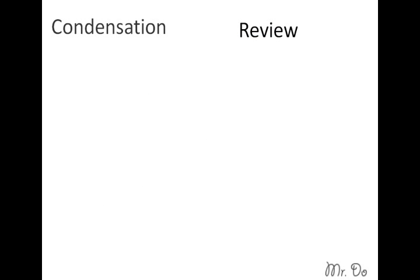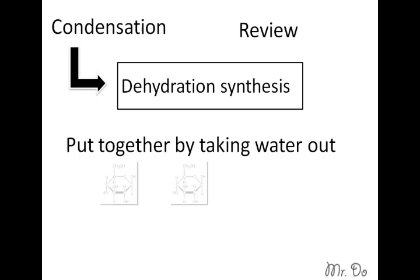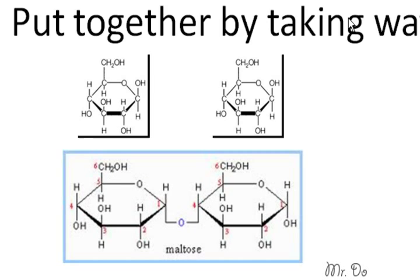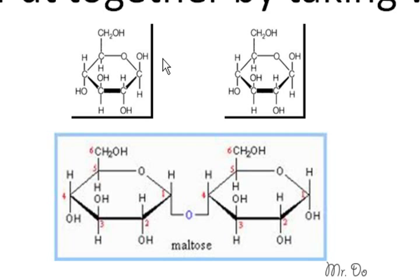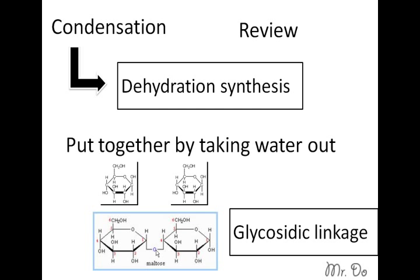Okay, let's do a quick review. Condensation, a specific example is dehydration synthesis. It's when you put things together by taking water out. So here we have two glucose, and then the aftermath. Notice that over here the OH, OH, and then we only have an O left. That means H2O was removed. They were put together by removing water, and this link created by those two is called glycosidic linkage.